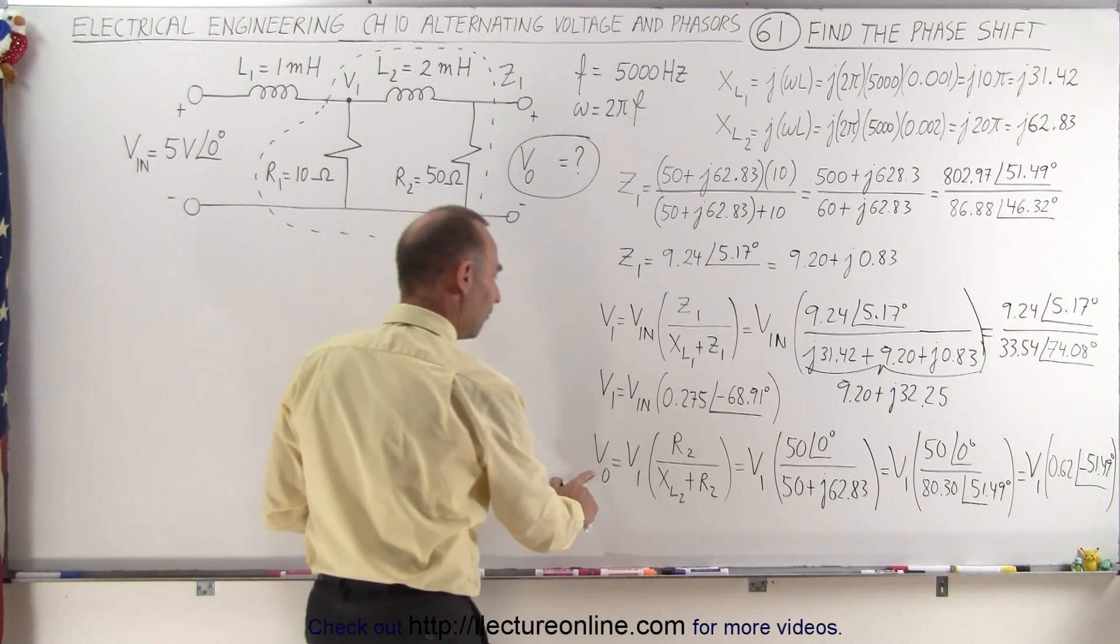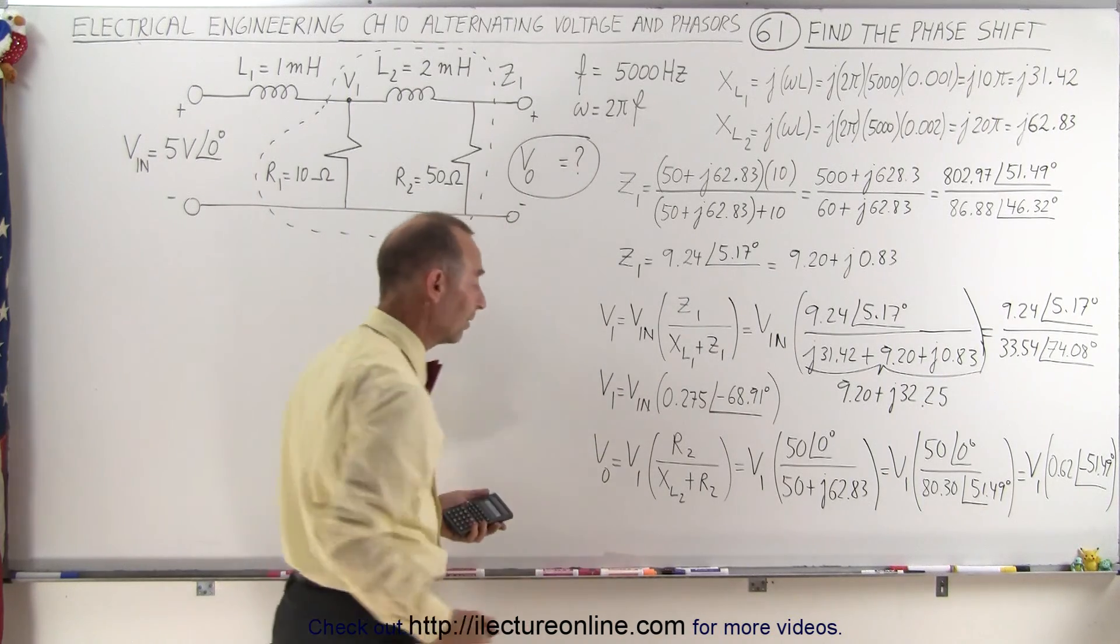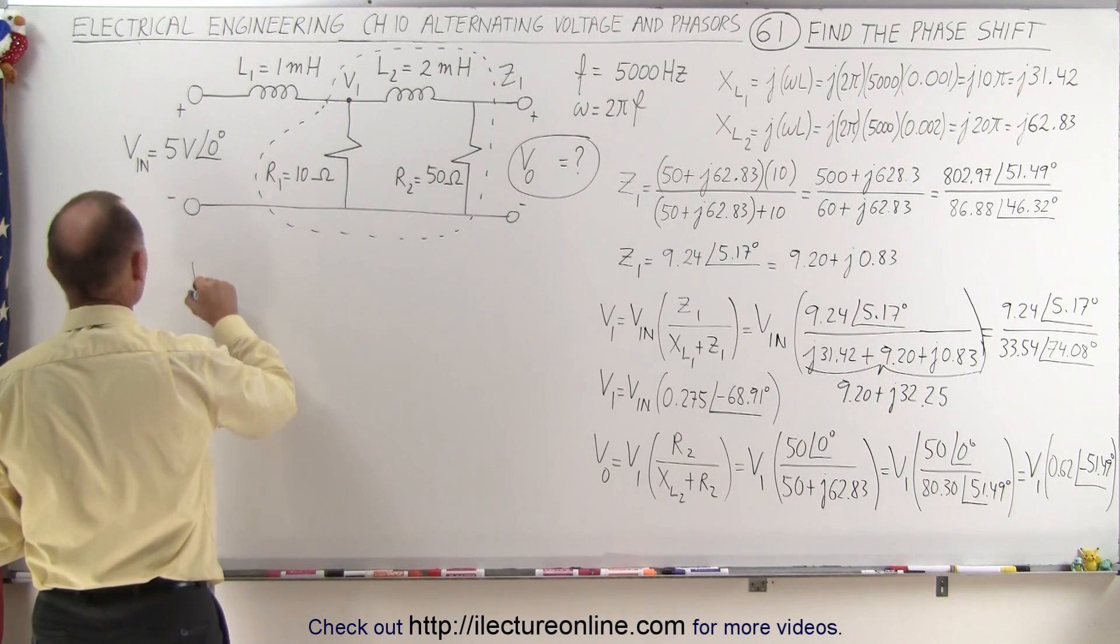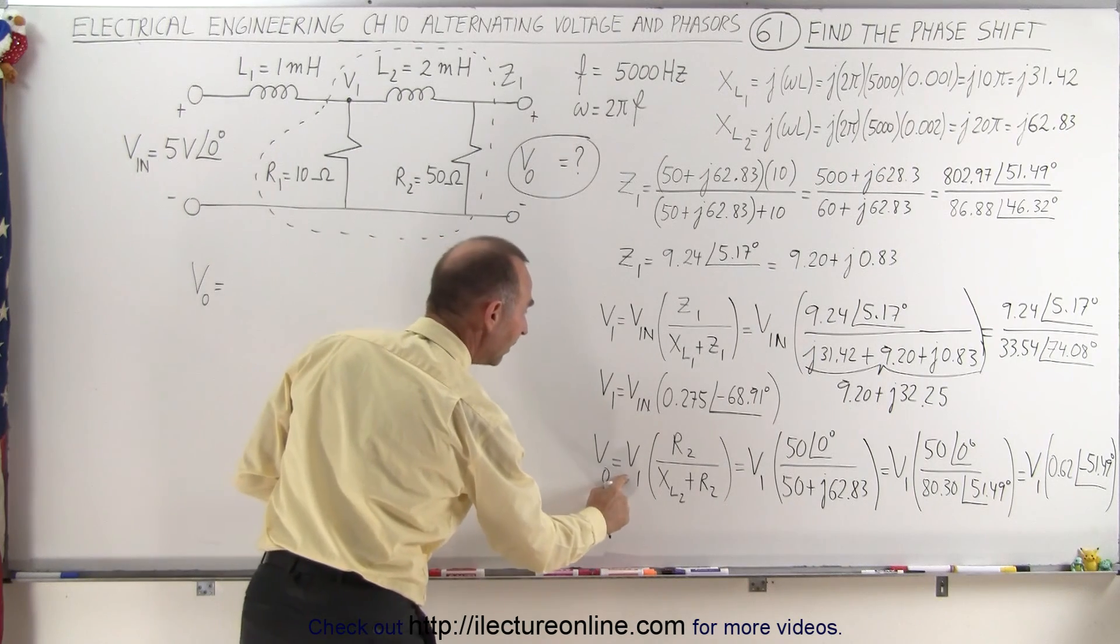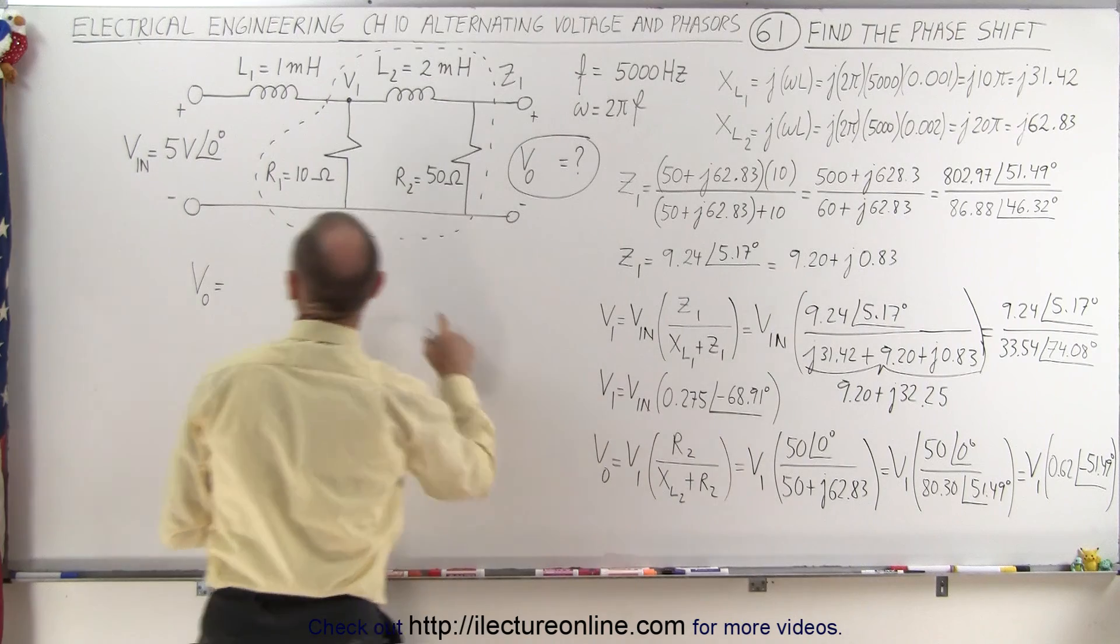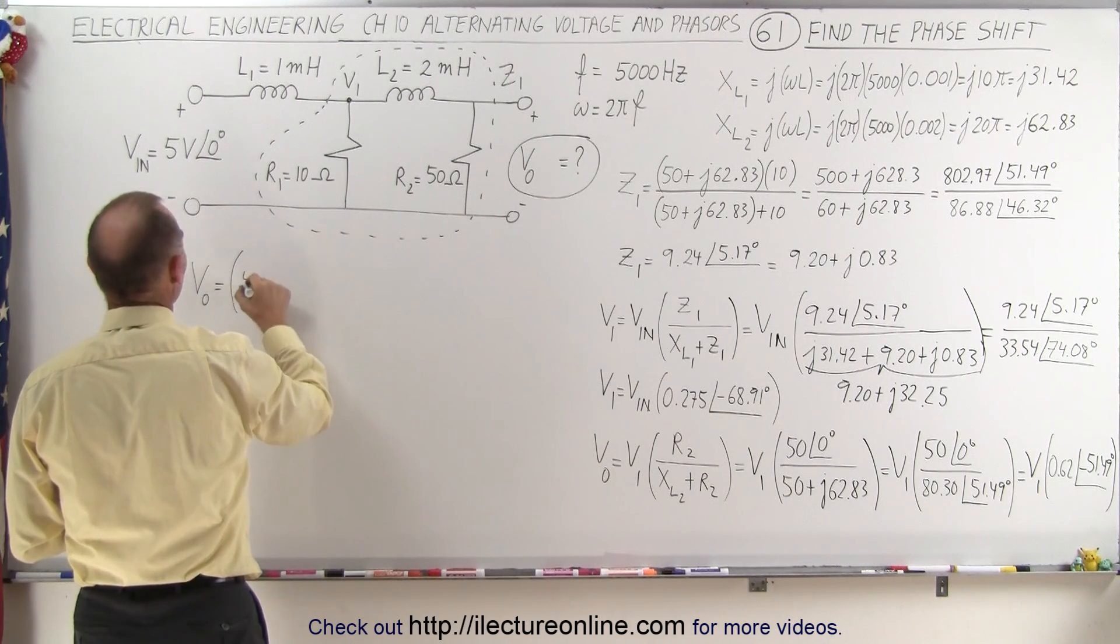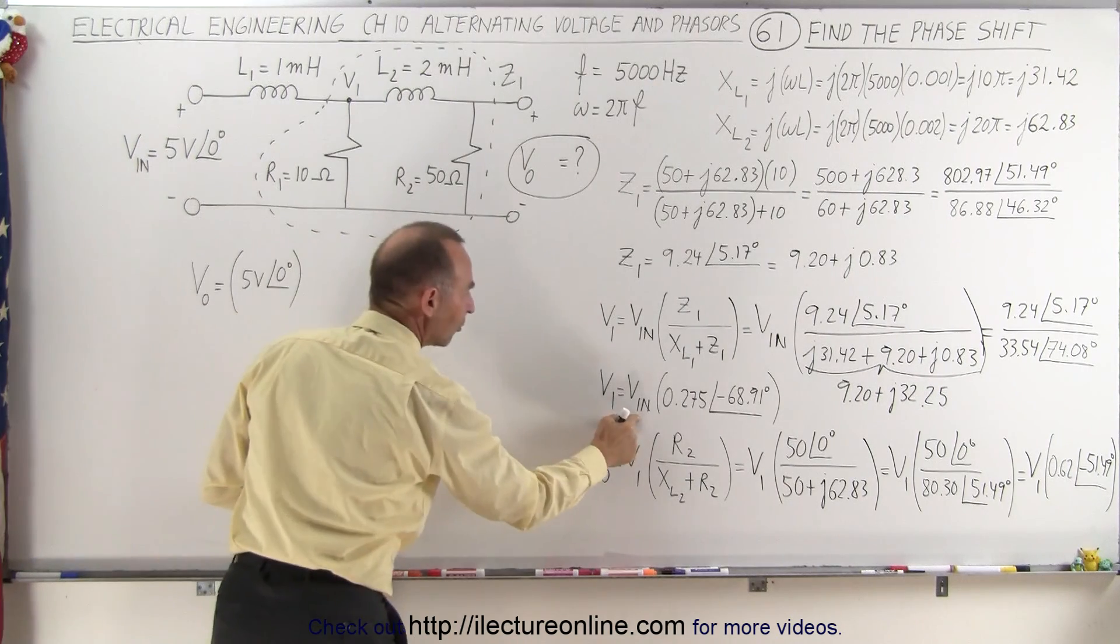Now we have V0 in terms of V1, and we have V1 in terms of Vin. So now we can calculate the output voltage. The output voltage equals V1, and V1 equals this quantity, which is Vin, which we know. So we get the input voltage, which is 5 volts with an angle of 0 degrees.